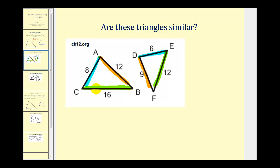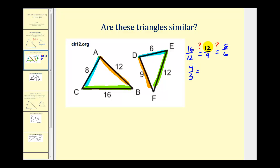Let's check to make sure these sides are proportional. We want to check if 16 to 12 equals 12 to 9, which equals 8 to 6. Well, 16 and 12 have a common factor of 4, so 16 to 12 simplifies to 4 to 3. 12 and 9 have a common factor of 3, and 8 and 6 have a common factor of 2, giving 4 twos in 8 and 3 twos in 6. Therefore, all three ratios equal 4 to 3, so the corresponding sides are proportional.